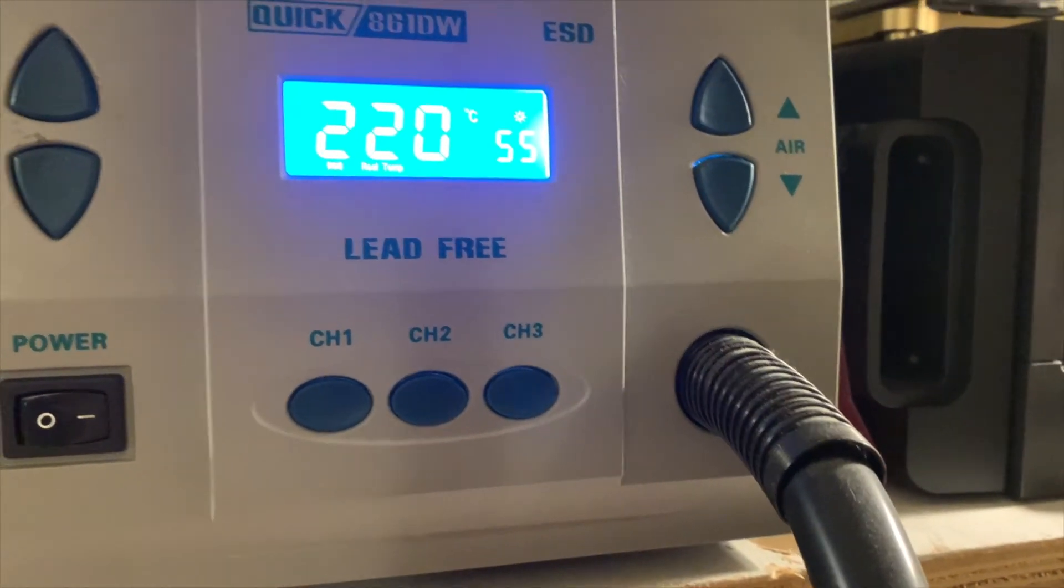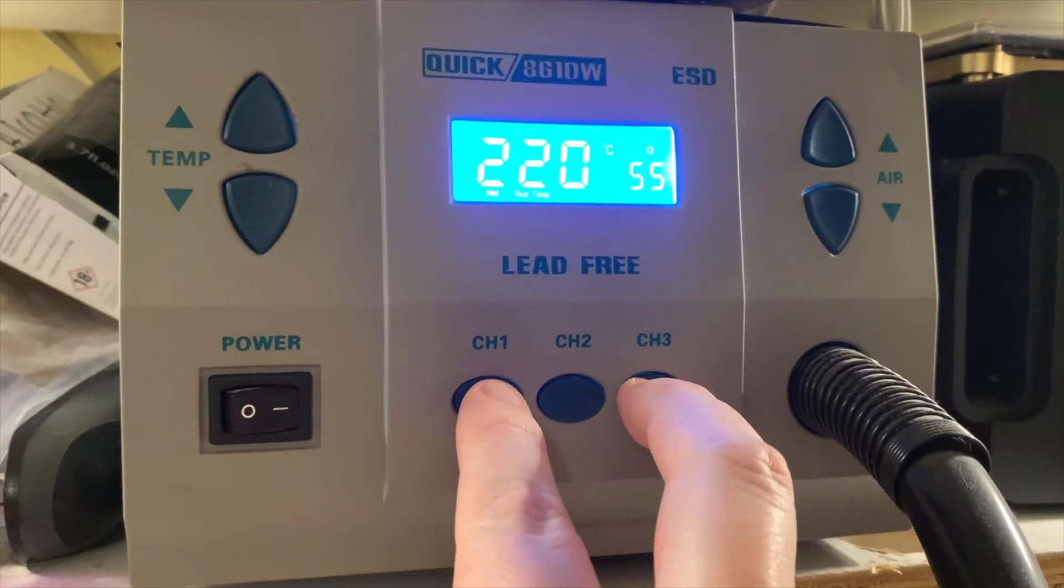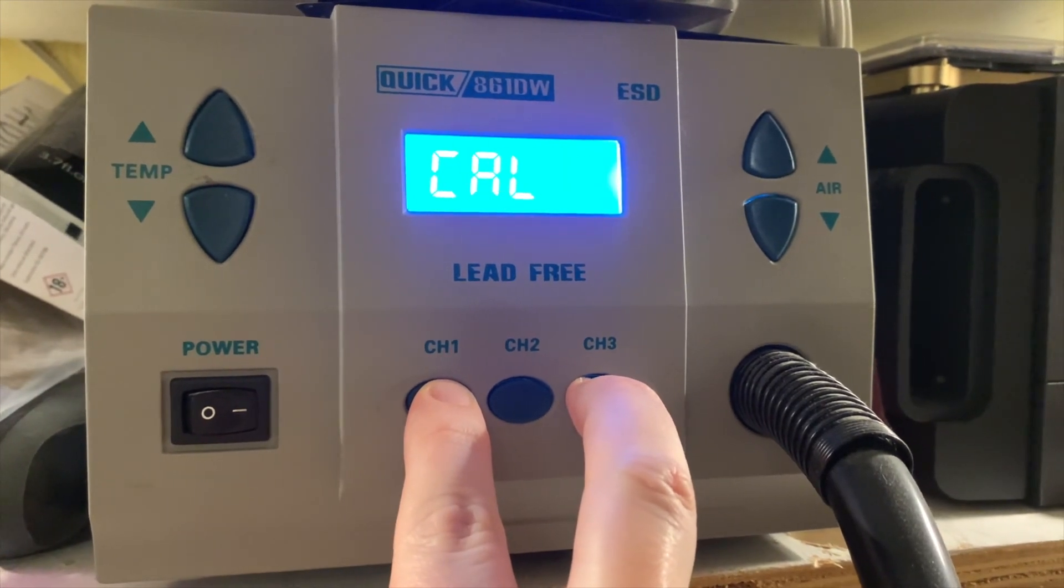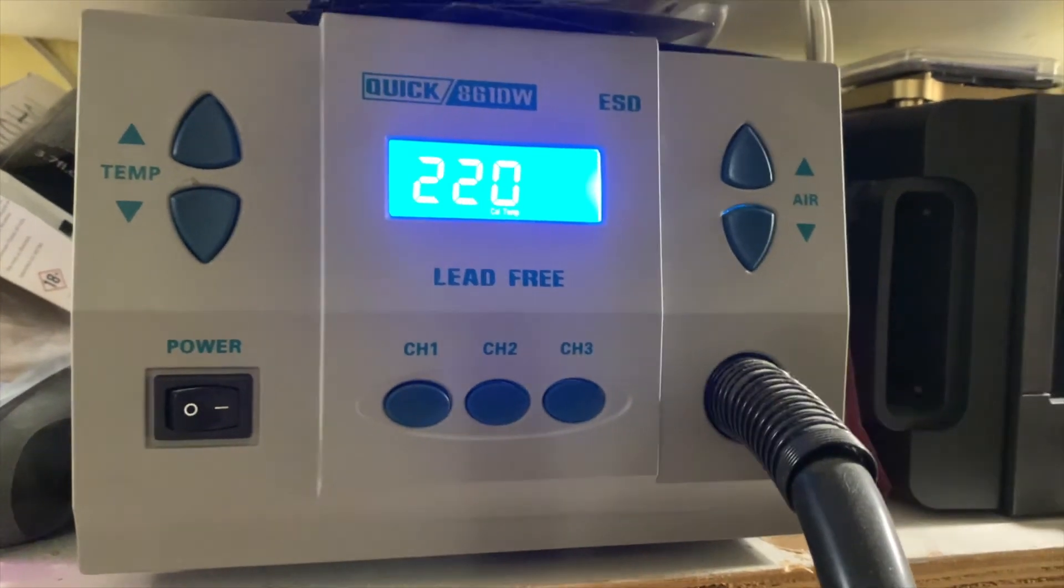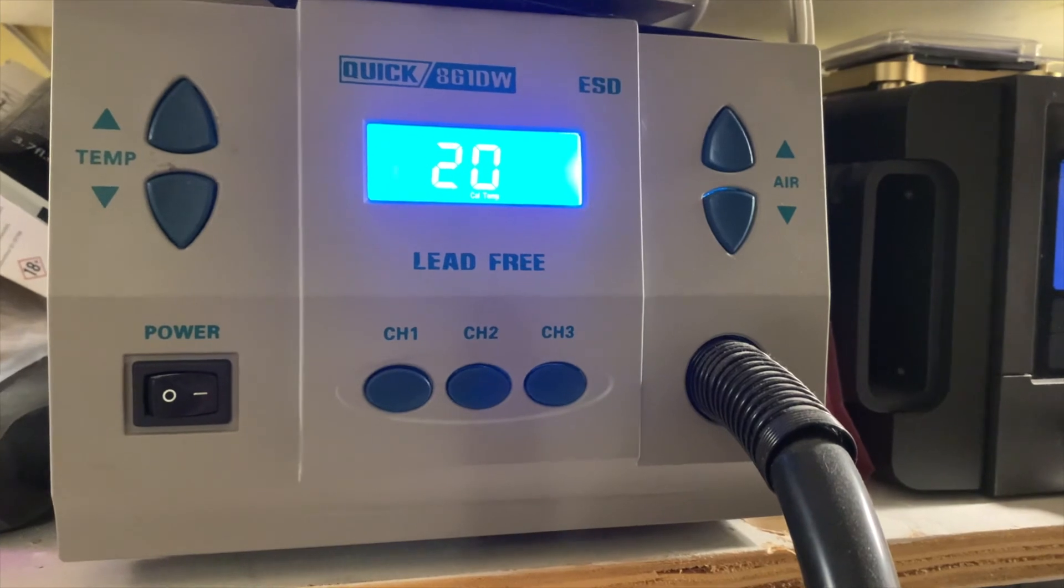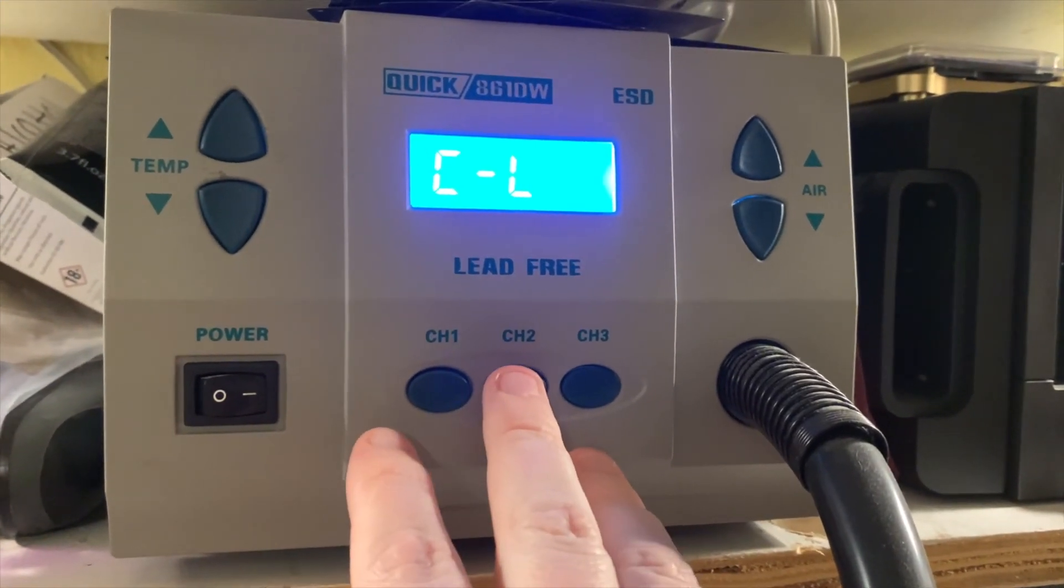So once you lift off the handset, you allow it to reach temperature and then you hold channel one and three in. Then you hear a beep and then call. That means calibrate and then you do the same principle. Basically you read the temperature and then set the difference and then the machine will calibrate itself.